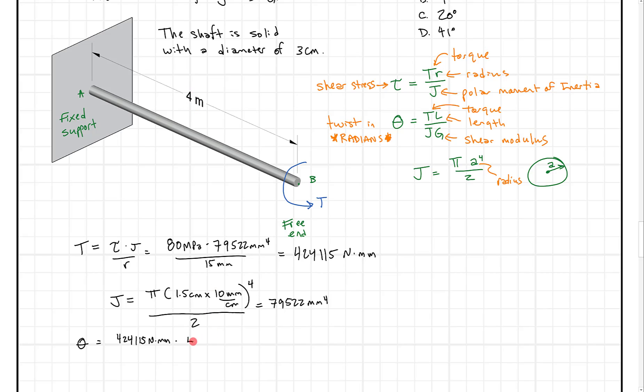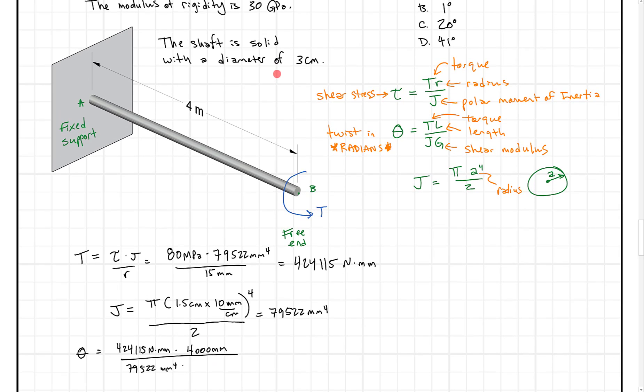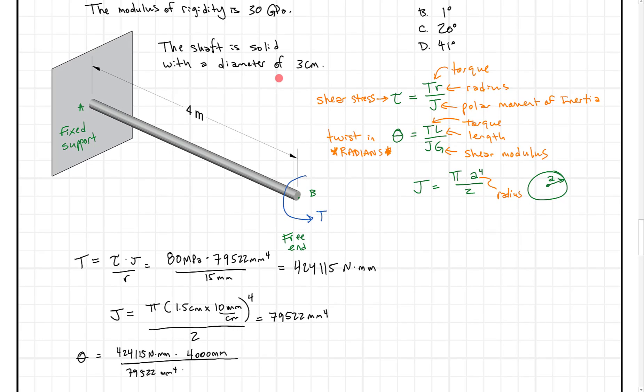Right so theta equals what we already saw for T which is the torque so we can just put that in 424.115 newton millimeters. Times L in this case 4 meters. I'm going to convert that to millimeters. 4,000 millimeters divided by JG. So J we've already figured out is 795.22 millimeters to the fourth. And G we were told here is 30 gigapascals. So if I move this down a little bit you can see it but 30 gigapascals that's equivalent to 30,000 megapascals.